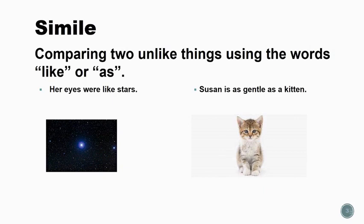A simile is comparing two unlike things using the words like or as. An example would be, her eyes were like stars — the girl's eyes are being compared to stars using the word like. Another example is, Susan is as gentle as a kitten. Susan is being compared to a kitten because they are both gentle, and this comparison uses the word as.